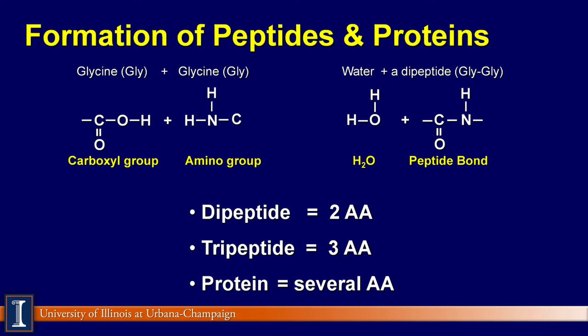When several amino acids are connected together by chemical bonds, a protein is formed. Amino acids are hooked together in a specific order and a specific amount to form specific proteins.